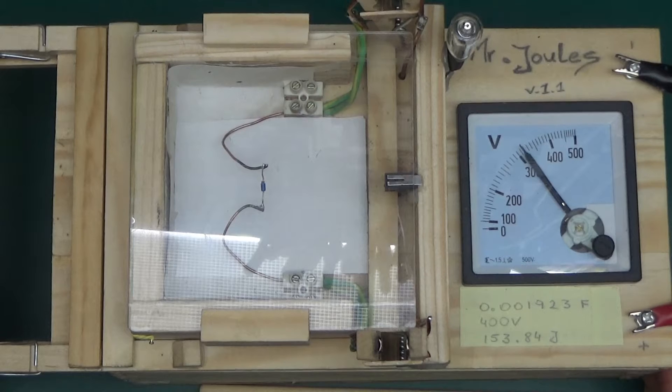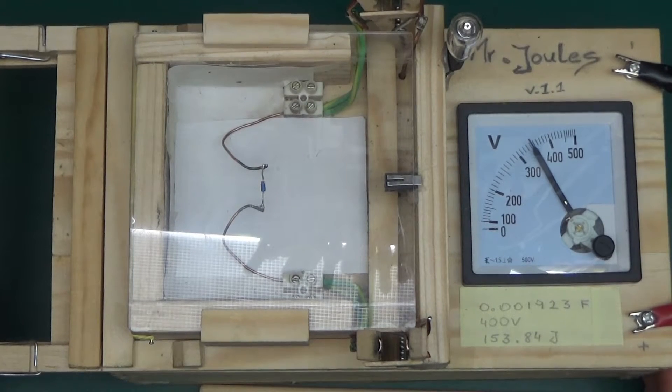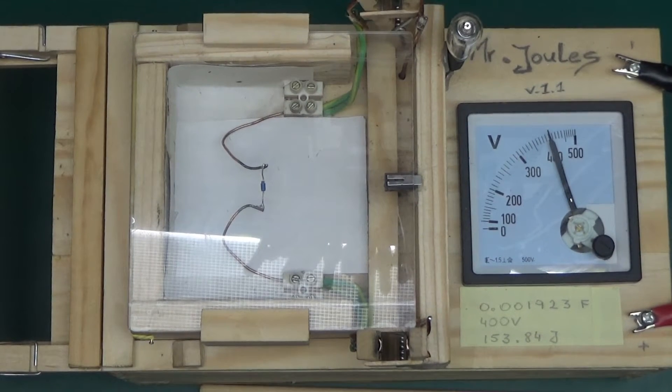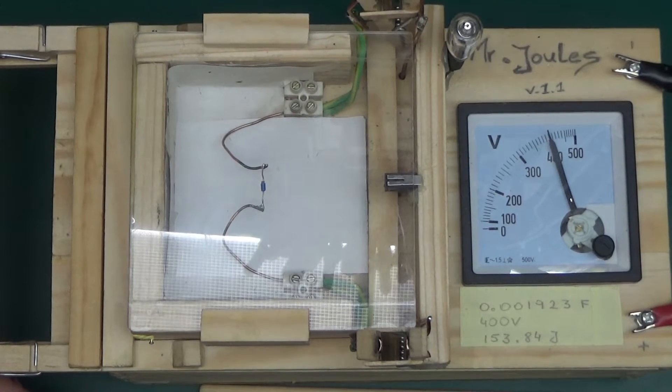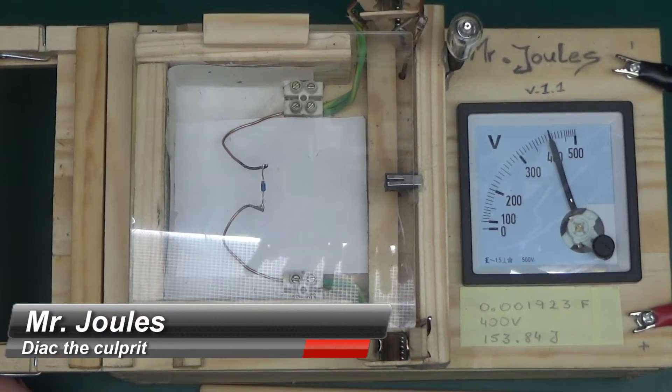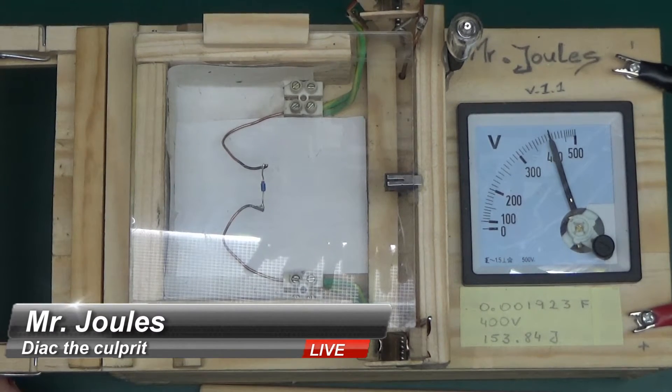Slowly but surely approaching 400 volts and let's see. So this is the DB3 Diac in Mr.Jewels in 3, 2, 1